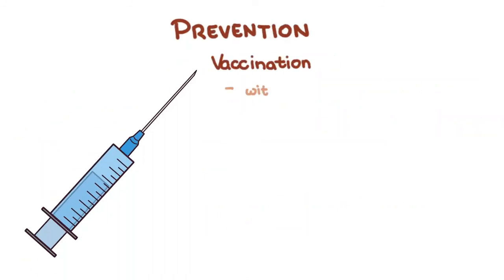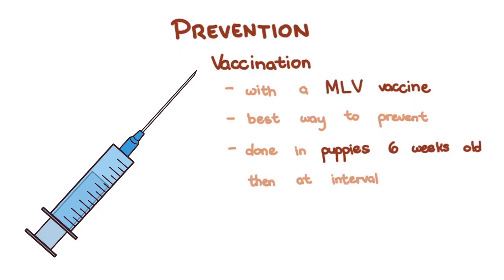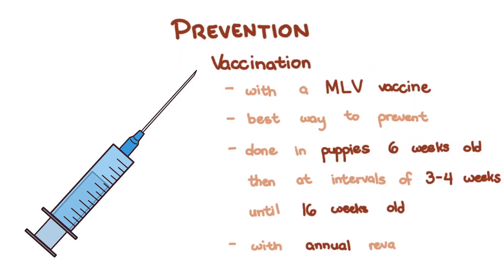Vaccination with a modified live virus vaccine is the best way to prevent canine distemper. This is done in puppies starting at 6 weeks old, at intervals of 3-4 weeks until 16 weeks old, with annual revaccination.